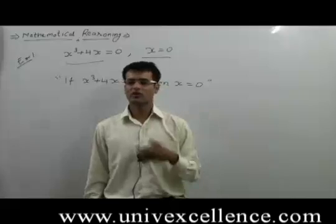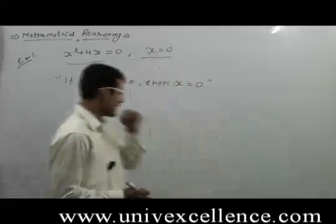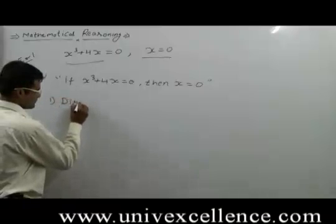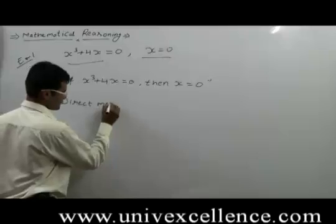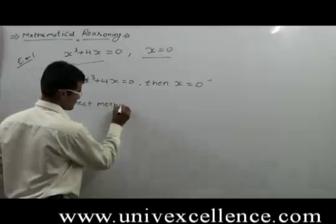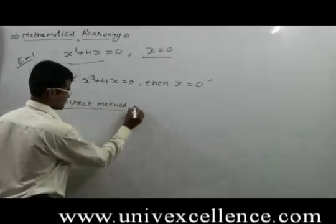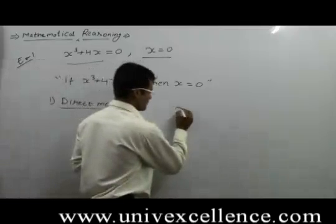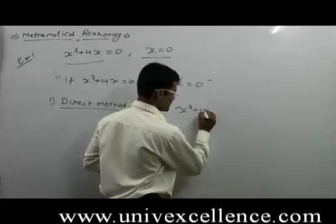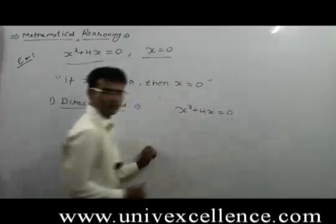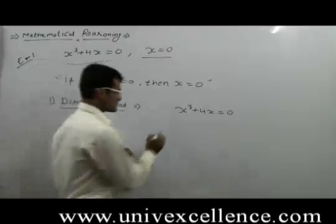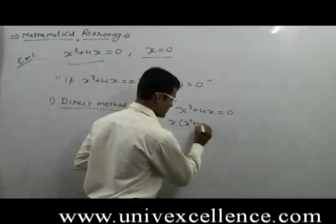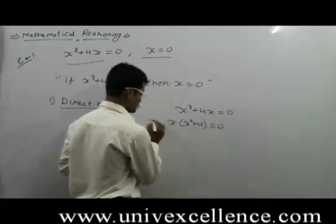First is the direct method. In the direct method, if we have x cube plus 4x is equals to 0, take x common — x into x square plus 4 is equals to 0.